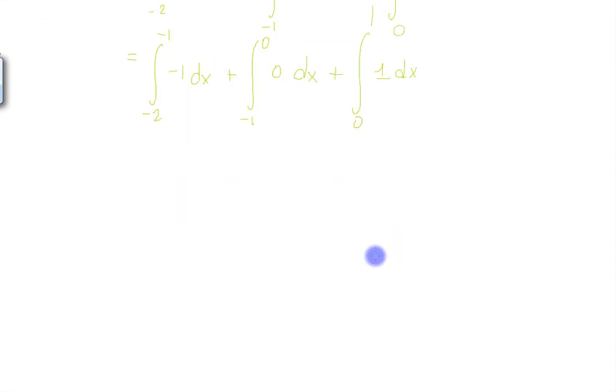Now we integrate, so we have that is equal to minus x evaluated from minus 2 to minus 1, plus 0 times x evaluated from minus 1 to 0, plus x evaluated from 0 to 1.